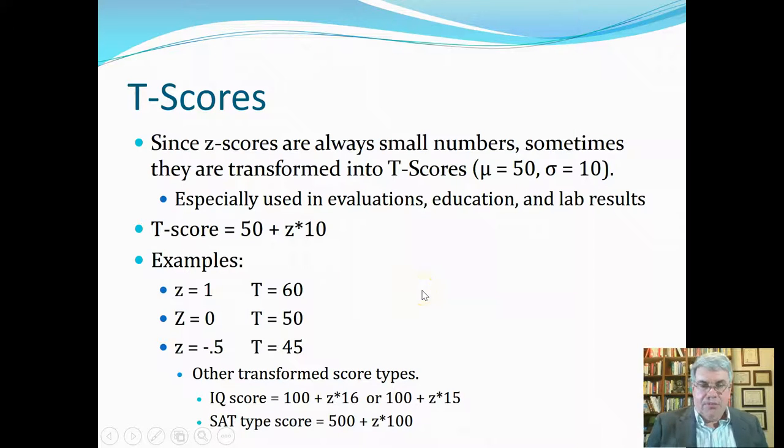Now, there's other transform scores that are of this type also. An IQ score is 100 plus 16 times Z, or sometimes it's 15 times Z, because there's two different systems of scoring IQ. That means if you have an IQ of 115, that means you're one standard deviation above the mean. If you have an IQ of 130, that means you're two standard deviations above the mean.